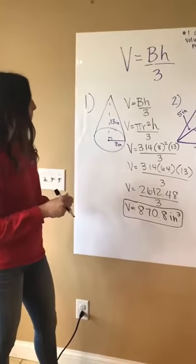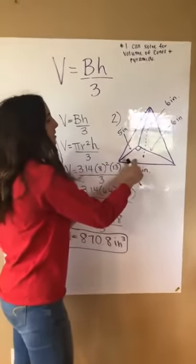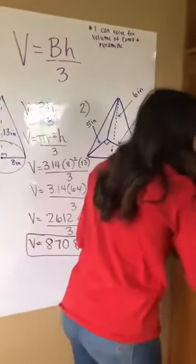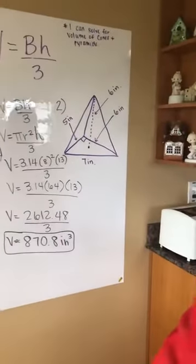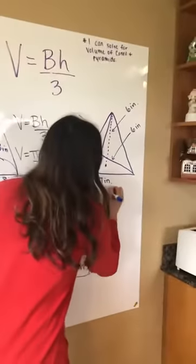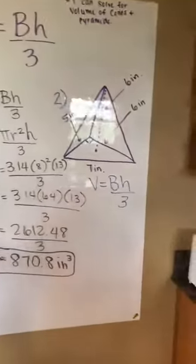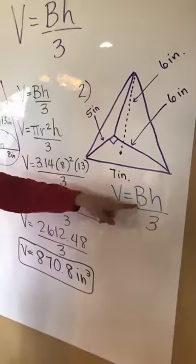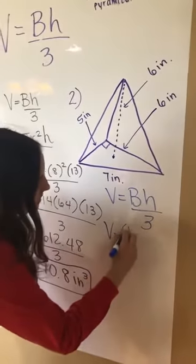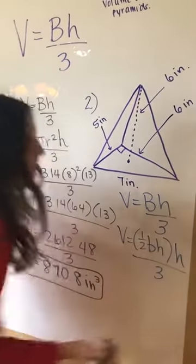Now, number two. A pyramid, the base is a triangle. This is a triangular pyramid. So again, let me change my marker color here. So again, we're going to start with the mama formula where capital B represents base area. Area of a triangle is one half base times height times height divided by 3.